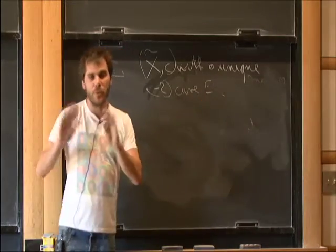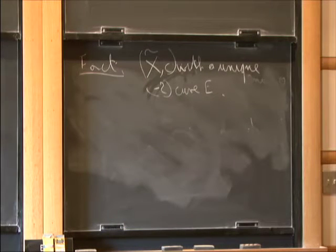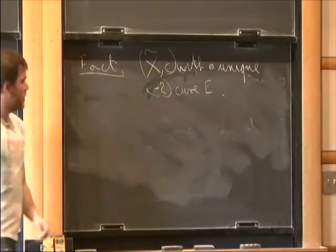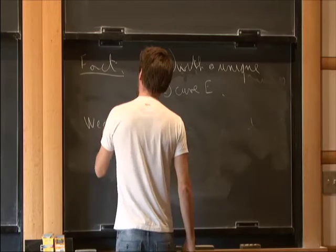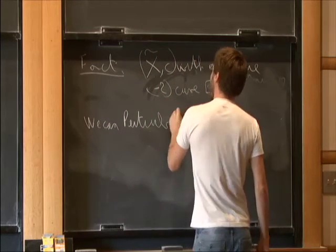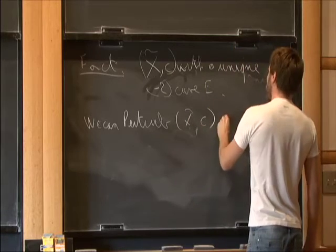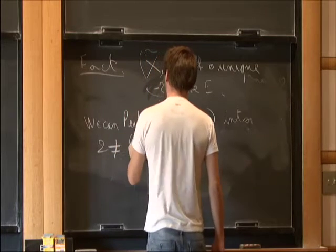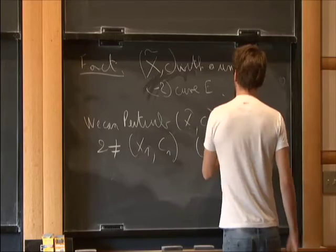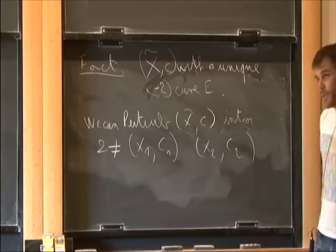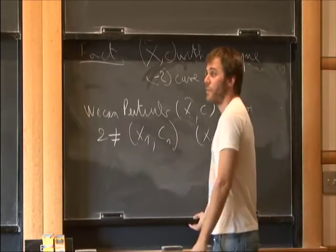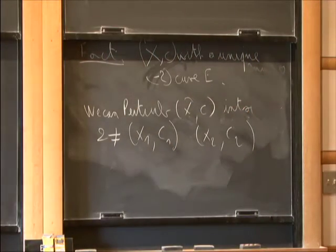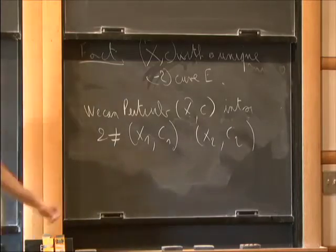Let's suppose that this curve has no real parts — it's just for the picture. With this picture in mind, we can perturb X̃_ℂ into two different real algebraic surfaces X1, C1 and X2, C2. The difference in the Euler characteristic of the real part will be exactly 2. This local picture can be applied each time you have a minus-2 curve on X̃.